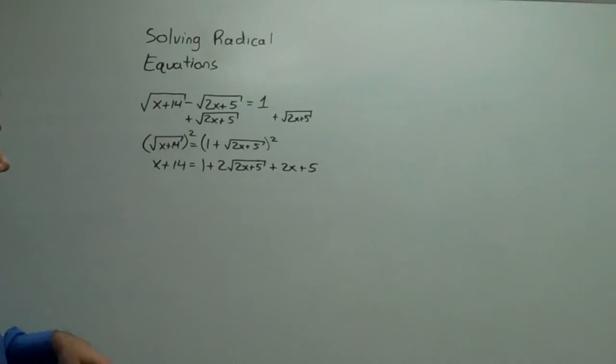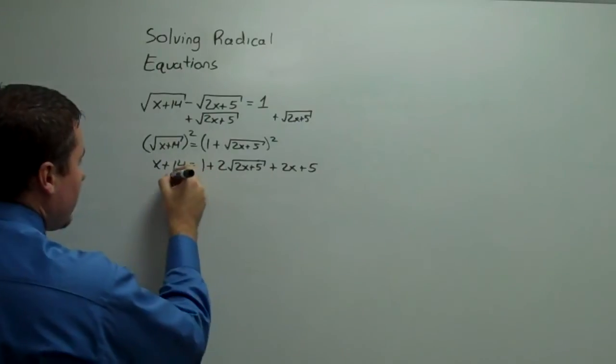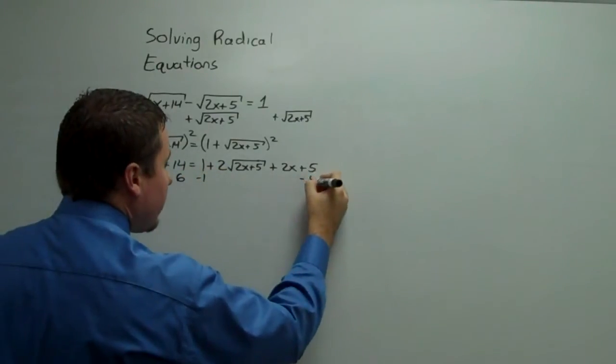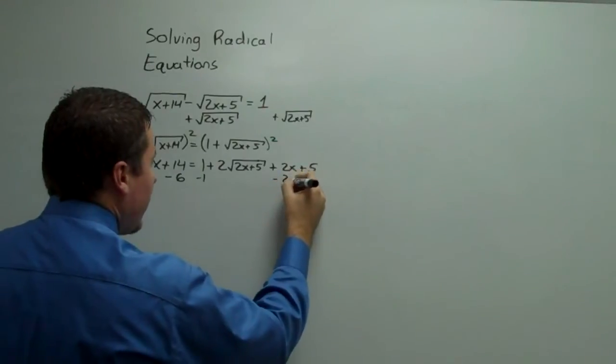It's at this point that I'm going to isolate this radical. So I subtract 6 from this side, and that subtracts 1 and subtracts 5, and I'm going to subtract 2x.